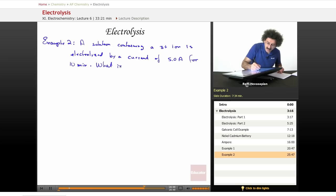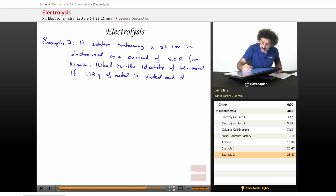The question is, what is the identity of the metal? What is the identity of the metal if 1.18 grams of metal is plated out during this time interval?